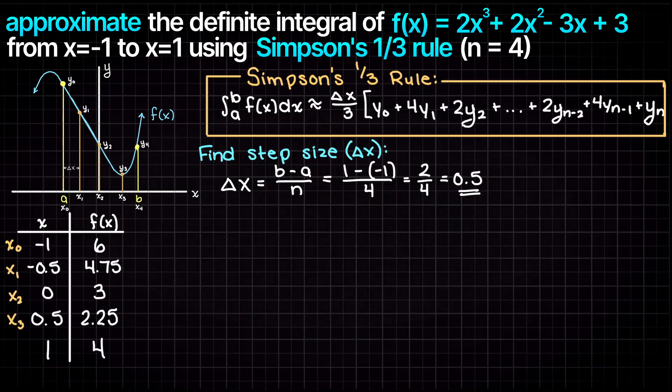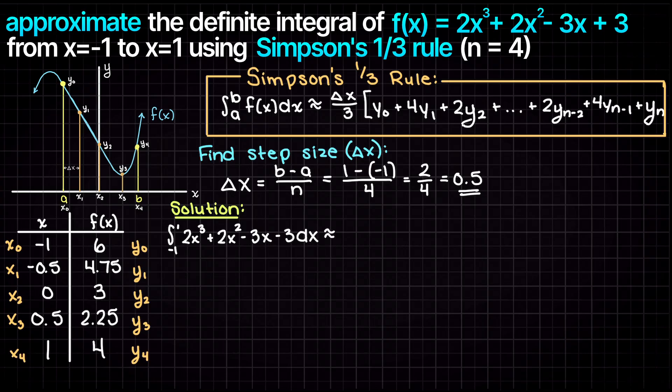As you can see, I have also labeled all of our input-output pairs to make the next step easier. Next, all we have to do is take our equation here and plug in our y values that we just found. Just note that when you are writing out Simpson's one-third rule, our first and last variables have one coefficients, whereas all the middle ones will have a 4, 2, 4, 2 repeating pattern.